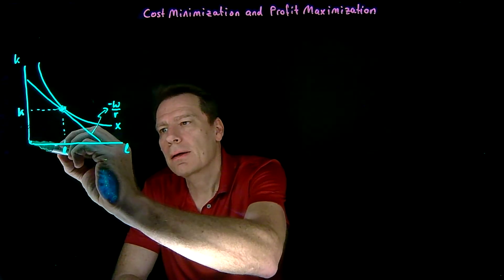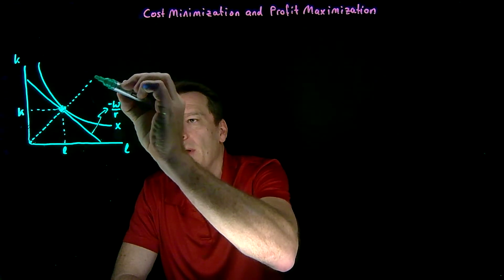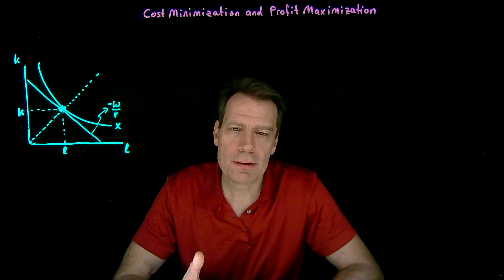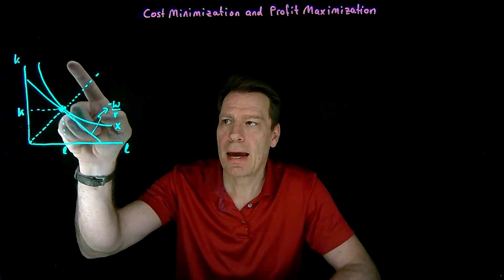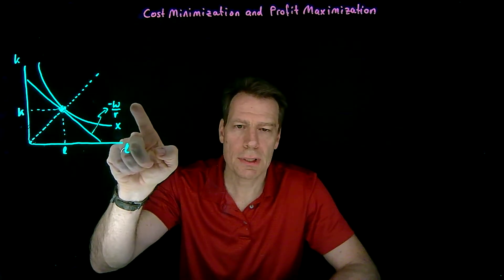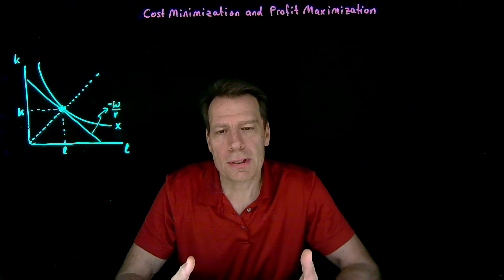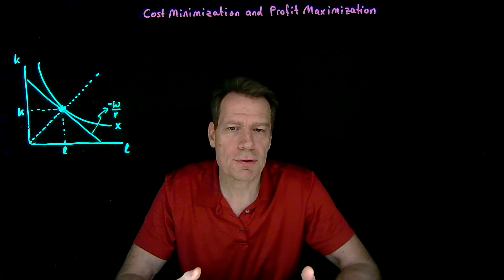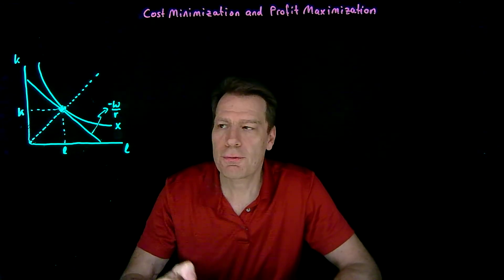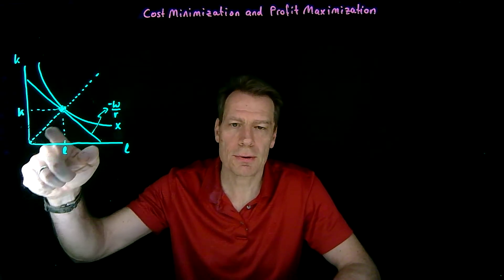It tells us that there's a ray that passes through this point from the origin, and that on every point of that ray, we have a picture that's similar to this. Every point on that ray has an isoquant that passes through it and an isocost budget that's tangent to it. So all the points on this ray represent cost-minimizing ways of producing different levels of output, and the firm will operate somewhere on that vertical slice that happens along that ray.